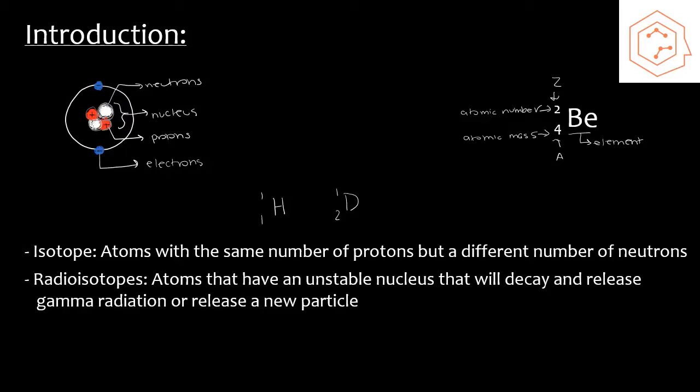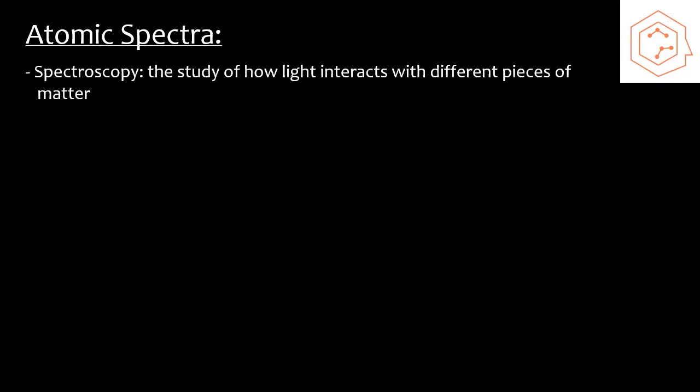There you can see there's still the same number of protons but they vary in their number of neutrons. Sometimes we'll have what's referred to as radioisotopes, which are still isotopes of the element but they have an unstable nucleus. These nucleuses will decay and they will release gamma radiation or they may even release a new particle entirely. Before we can fully understand Bohr's model, it's important that we understand a bit more about the atomic spectra.